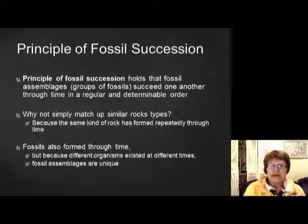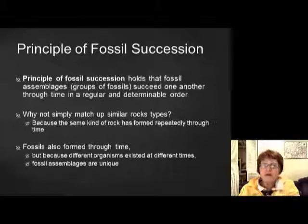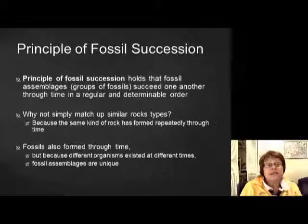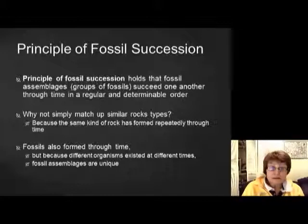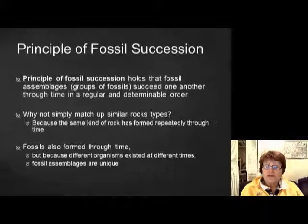The principle of fossil succession tells us that fossil assemblages succeed one another through time in a regular, one-way direction — there is no turning around, fossils won't come back. Whenever an animal goes extinct, that's it, you will never see it again — just like a human who dies will never come back. We cannot simply match up rocks because similar environments produce very similar rocks, so you could not tell time equivalents just by using rocks. You have to use fossils to tell that rocks are exactly the same age. The fossil assembly is also very unique, so this is important.